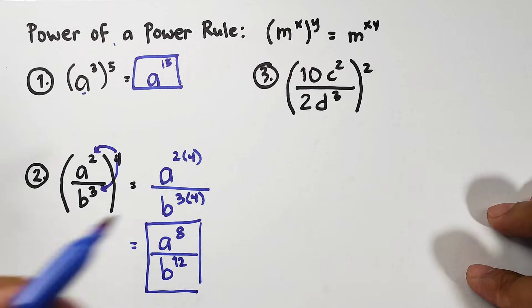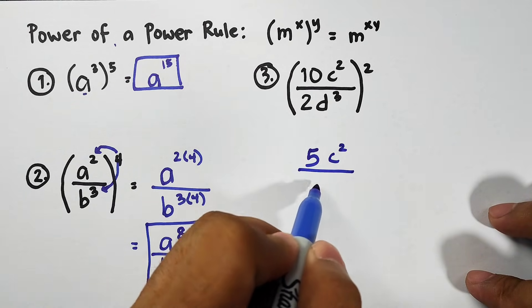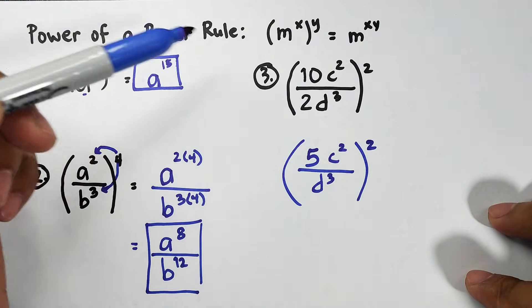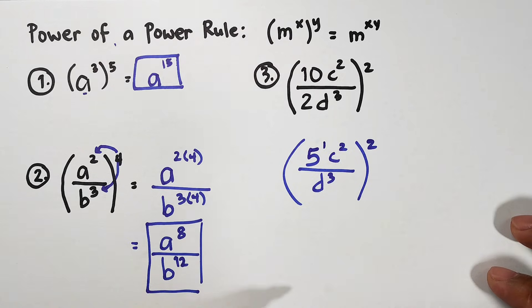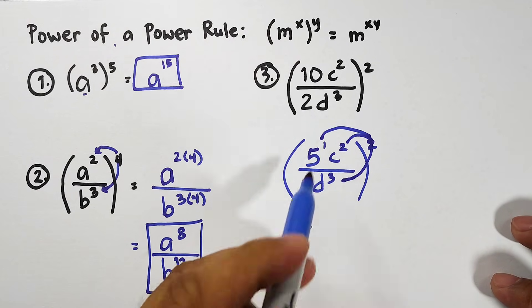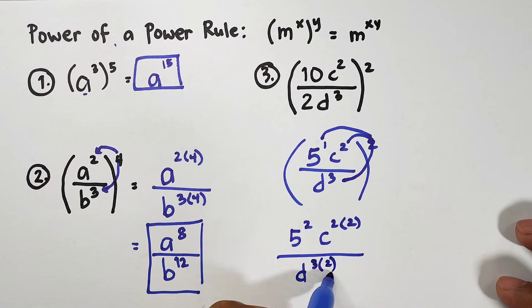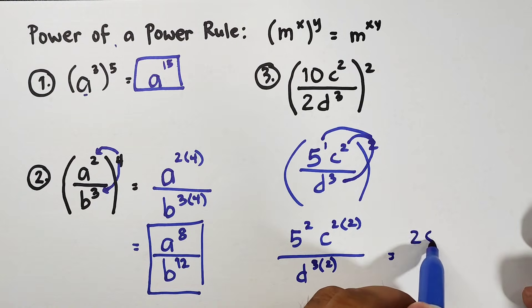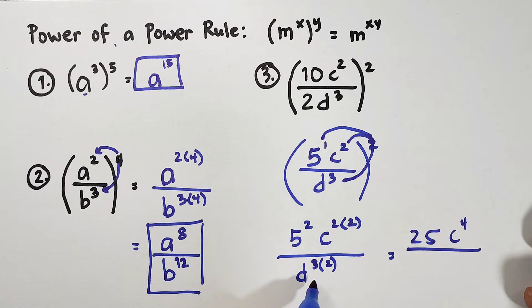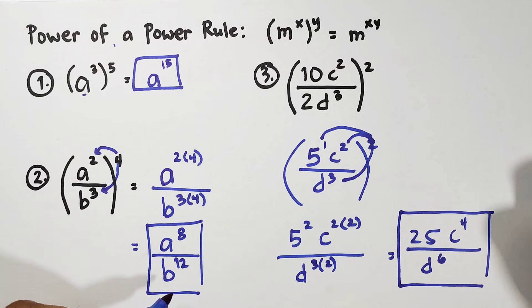So, let's continue with item number 3. For number 3, let's simplify first the coefficient inside. You have 5c square over d cube raised to the second power. So, how come 10 became 5? 10 over 2 or 10 divided by 2 is simply 5. So, here, we have an original exponent of 1. So, let's do this one by one. For the exponent, we have 5 raised to 2 because 2 times 1. C raised to 2 times 2 over d raised to 3 times 2. Simplify. Your 5 squared is 25. Your c squared raised to 2 times 2 is c to the 4th power over d raised to the 6th power. And this is now the answer for item number 3. So, that's the third one.